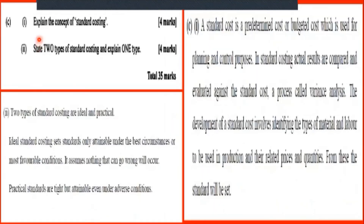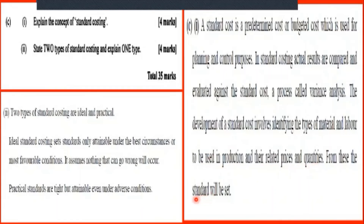The last part of the question asks to explain the concept of standard costing. A standard is a predetermined cost or budgeted cost which is used for planning and control purposes. In standard costing, actual results are compared and evaluated against the standard cost, a process called variance analysis. The development of standards involves identifying the types of material and labor to be used in production and their related prices and quantities, from which the standard will be set.